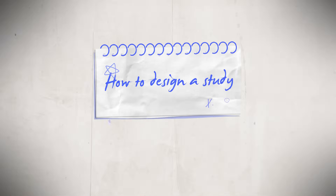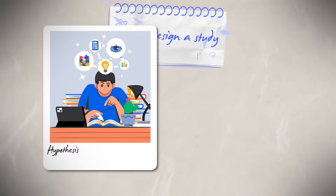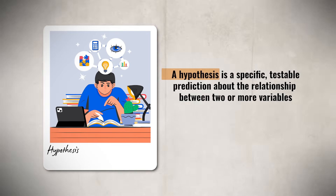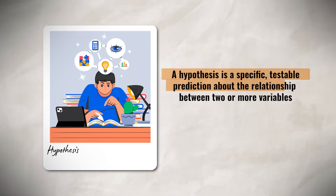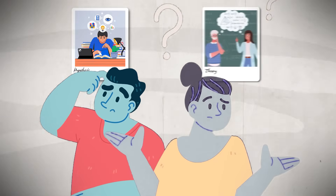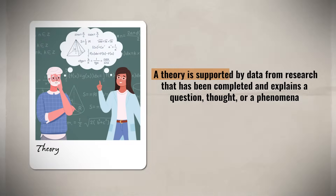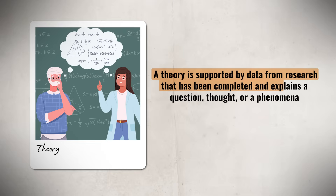Now let's talk about how to design a study. First, we need to state the hypothesis — a specific, testable prediction about the relationship between two or more variables. Students often confuse a hypothesis with a theory. A theory is supported by data from completed research and explains a question, thought, or phenomenon. Theories are often based on tested hypotheses and allow us to make predictions about how things are and what might happen in the future.